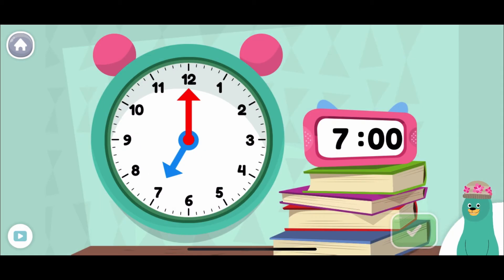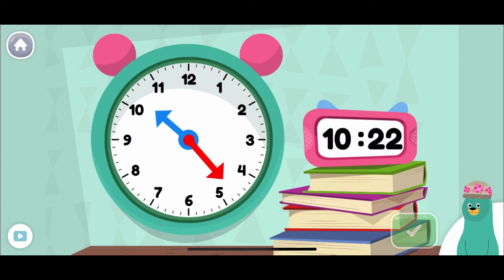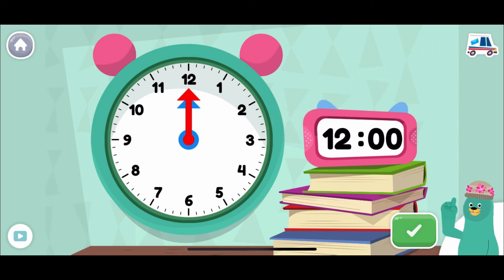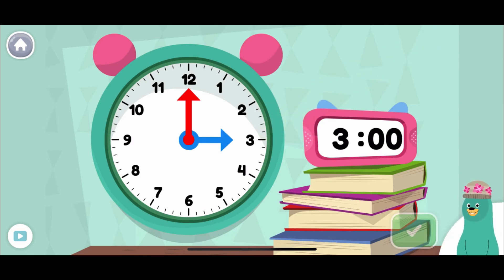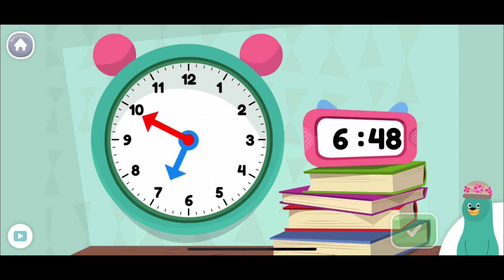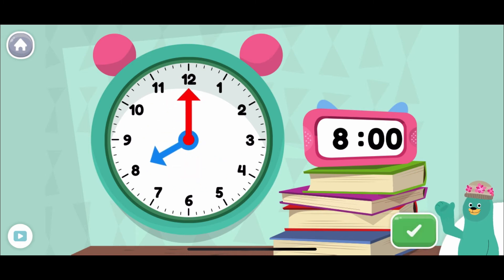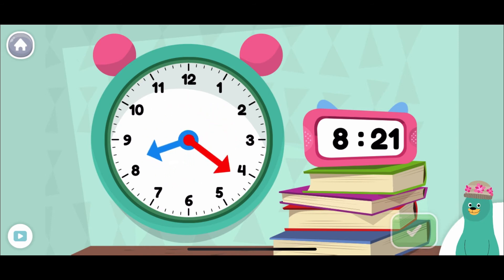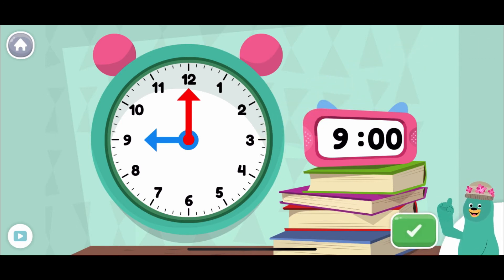Move the minute hand on the round clock to show twelve o'clock. You made the clock show twelve o'clock. Make the clock show eight o'clock. Super job! You made the clock show eight o'clock. Make the clock show nine o'clock. You made the clock show nine o'clock.